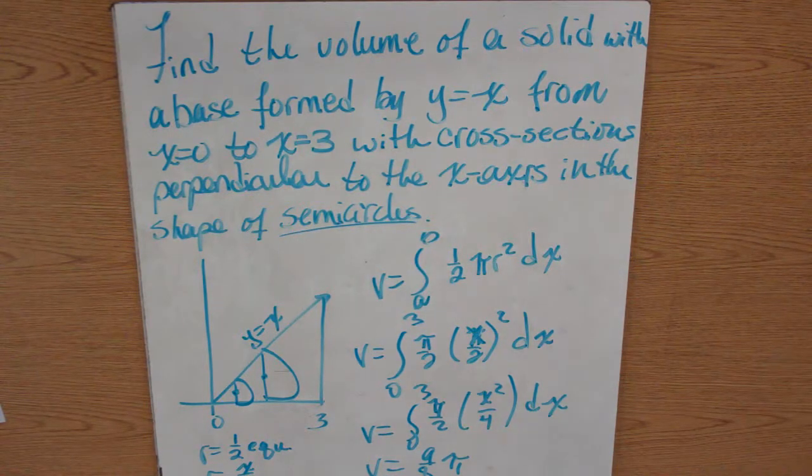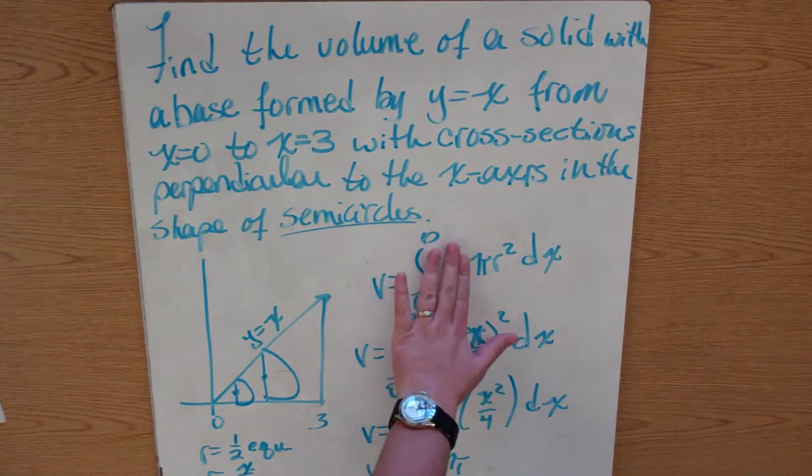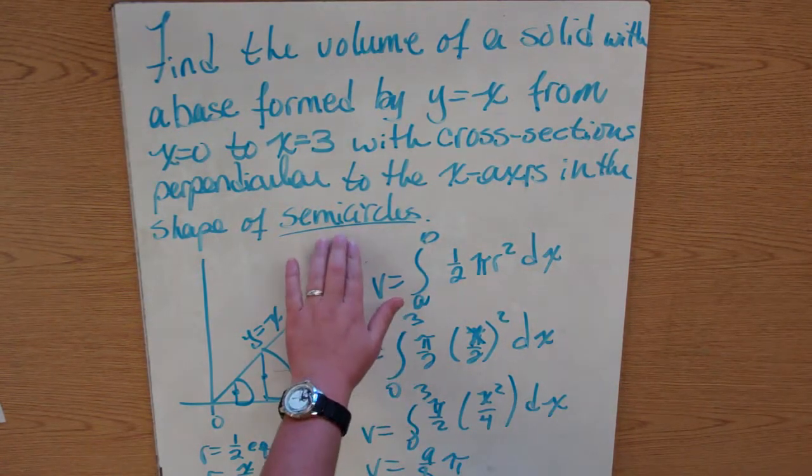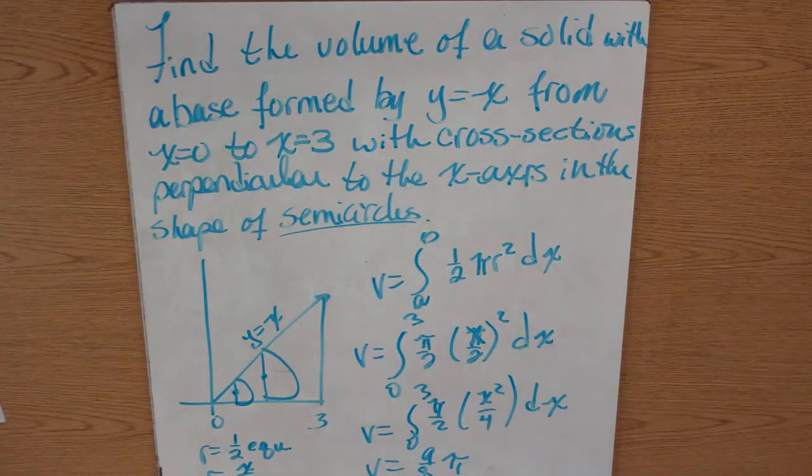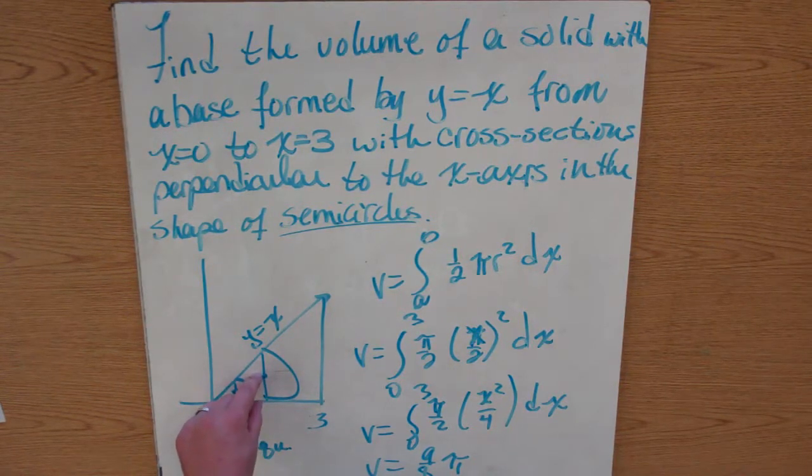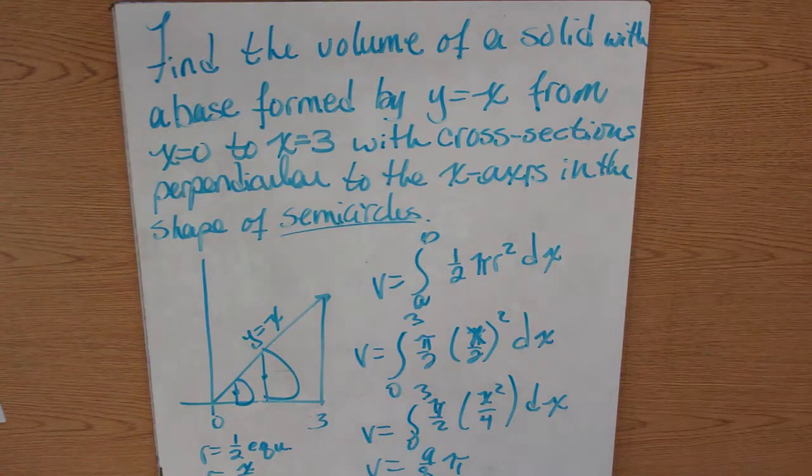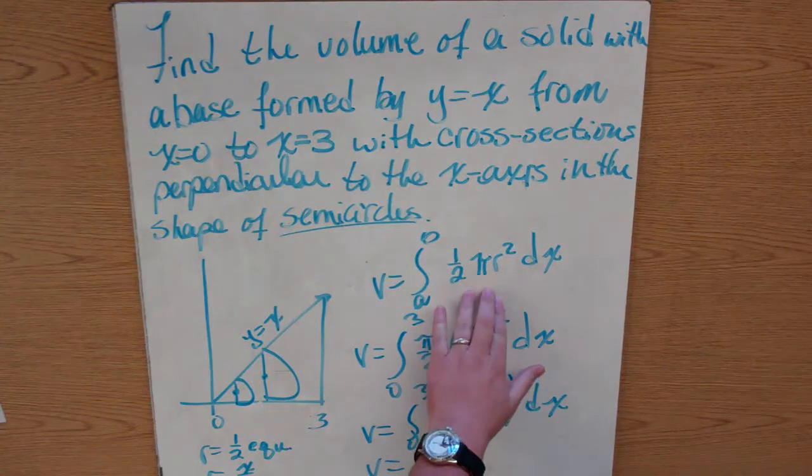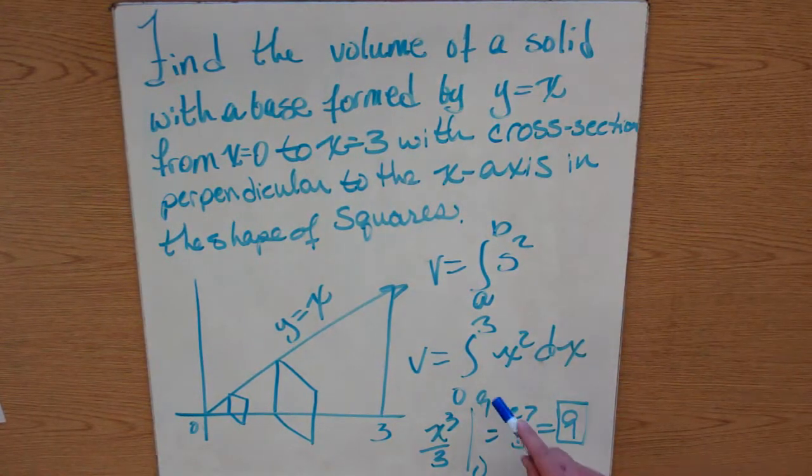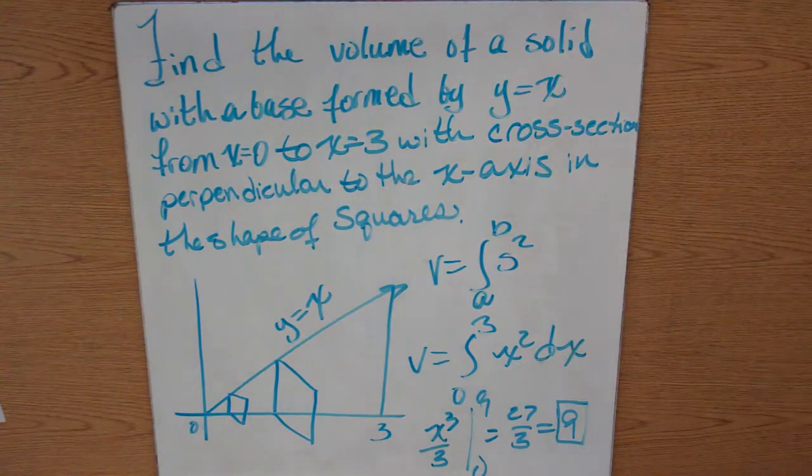So these work the same exact way, except now, instead of this always being pi r squared, you're going to have to substitute in the formula for the area of your cross sections. And keep in mind, if they're a semicircle, you have to figure out what the radius is. In this case, the radius is 1 half times the equation. But other than that, they work the exact same way, you just put your new formulas in here. Like for instance, when we did the square, we just used side squared, so we just integrated x squared dx and got 9.